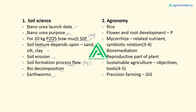Overall, soil science question level was easy to moderate. Moving to agronomy, there was a question related to rice which was very easy. Then questions on mineral nutrition regarding phosphorus, flowering, and root development. Three to four questions were asked from mycorrhizae alone.